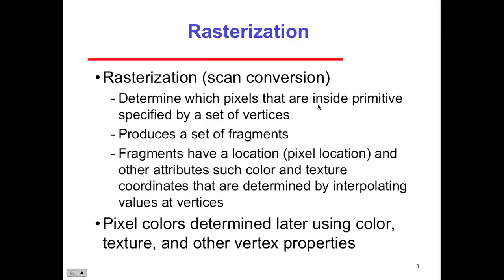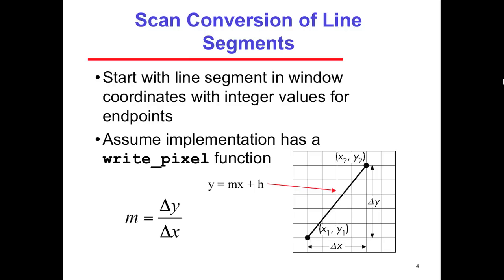Going back to rasterization and scan conversion: we determine which pixels are inside the primitive specified by a set of vertices. We produce a set of fragments — image fragments — which have a pixel location and other attributes such as color and texture coordinates, all determined by interpolating the values of the vertices. Pixel colors are determined later using color, texture, and other properties. For scan conversion of line segments, we start with the line in window coordinate space with integer values for the endpoints.